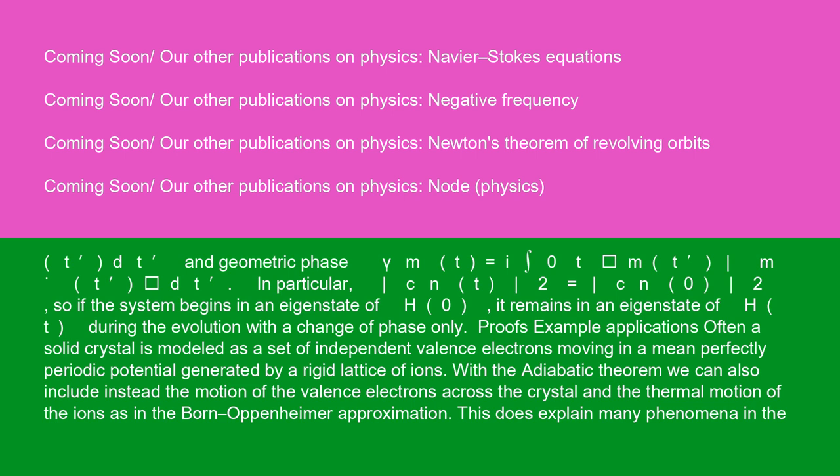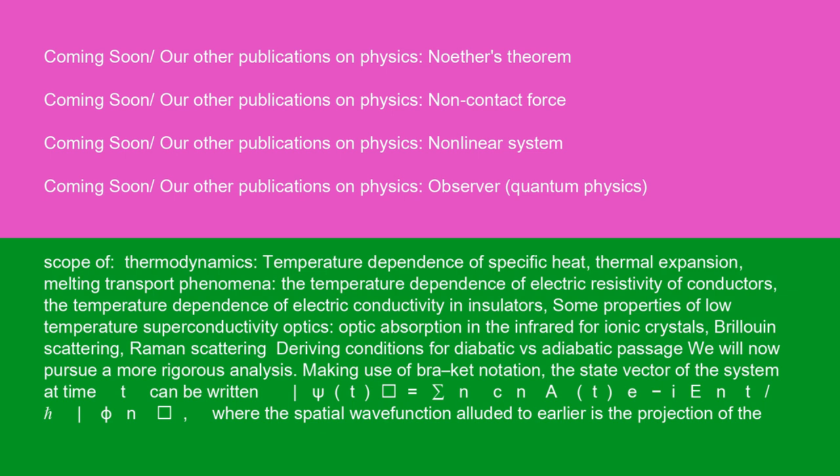Applications: often a solid crystal is modeled as a set of independent valence electrons moving in a mean perfectly periodic potential generated by a rigid lattice of ions. With the adiabatic theorem, we can also include the motion of the valence electrons across the crystal and the thermal motion of the ions, as in the Born-Oppenheimer approximation. This explains many phenomena in thermodynamics, including: temperature dependence of specific heat, thermal expansion, melting, transport phenomena, temperature dependence of electric resistivity of conductors and electric conductivity in insulators, some properties of low-temperature superconductivity, optic absorption in the infrared for ionic crystals, Brillouin scattering, and Raman scattering.